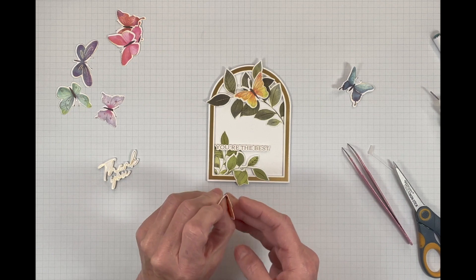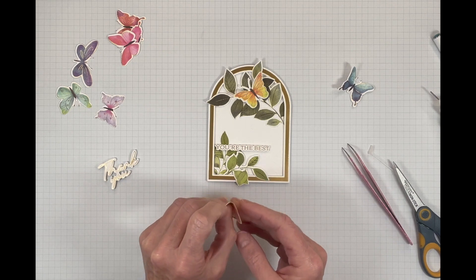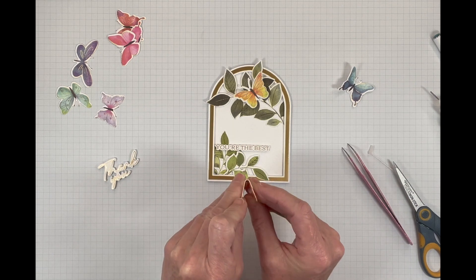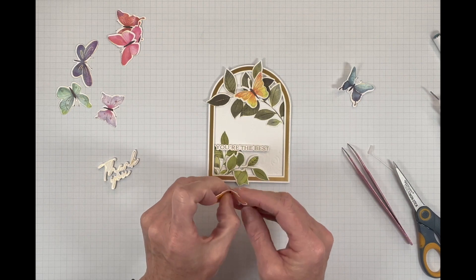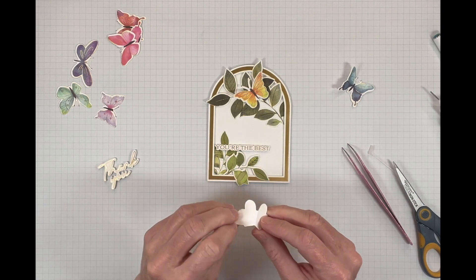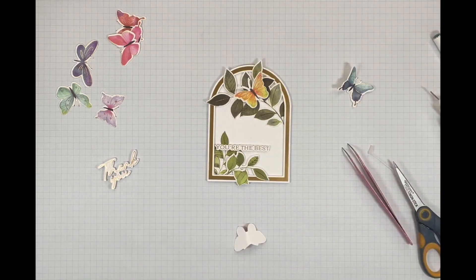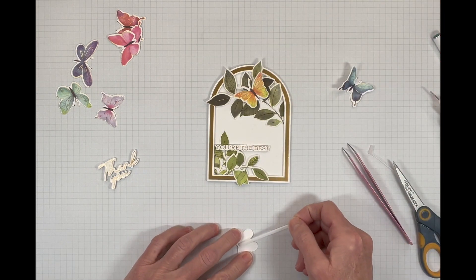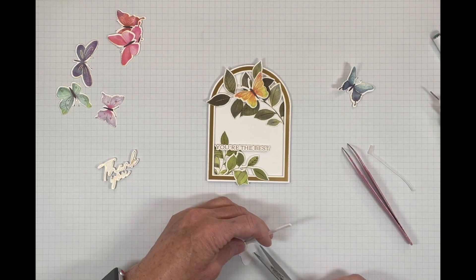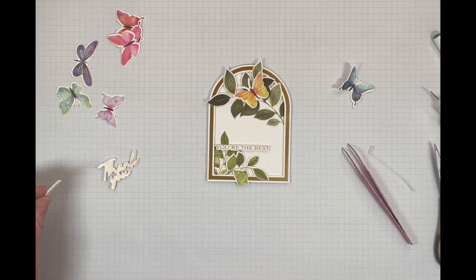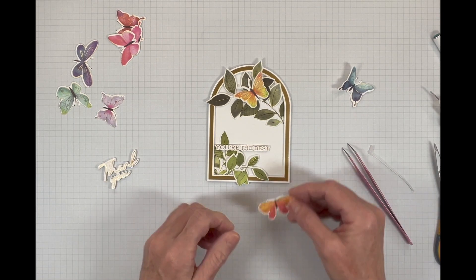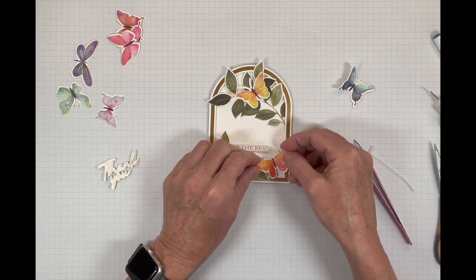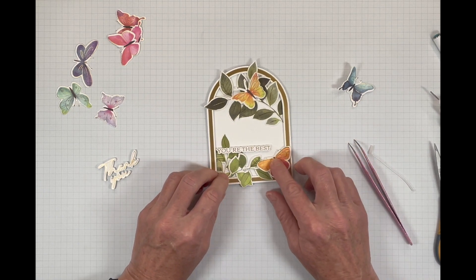All right, let's put our orange one here down in the corner again, just kind of folding, putting little creases, two little creases on the side, on the body of that butterfly. We can attach that one right there. That's perfect.